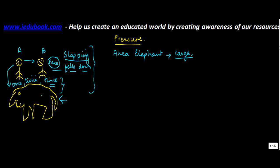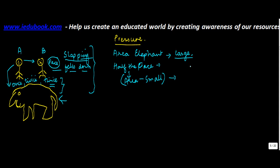On the large body of the elephant, when force was applied, the impact was spread over a very small area relative to its size. Whereas when A slapped B, the impact covered roughly half the face — the area was small. Because the area where the impact was applied was small, the pressure was large.